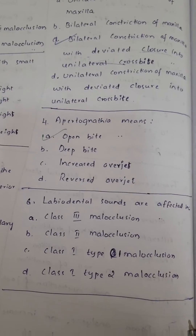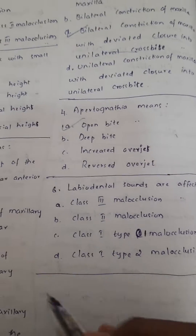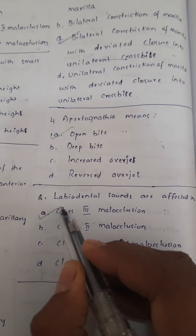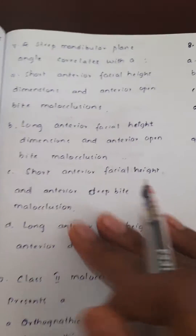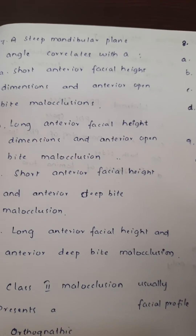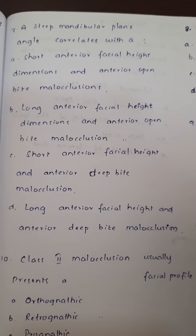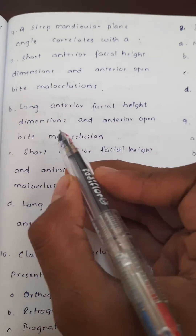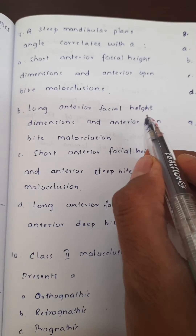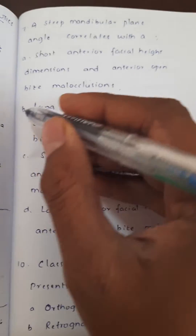The labiodental sounds are affected in Class 3 malocclusion. A steep mandibular plane angle correlates with long anterior facial height dimensions and anterior open bite malocclusion.